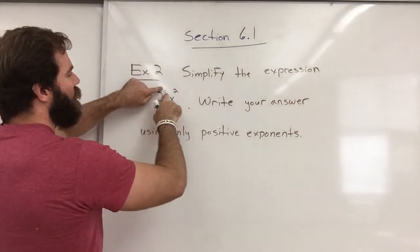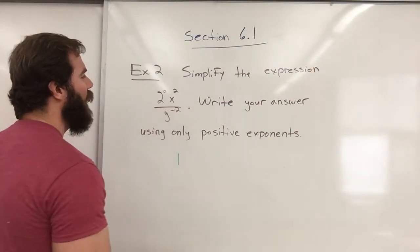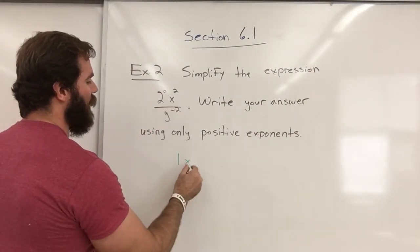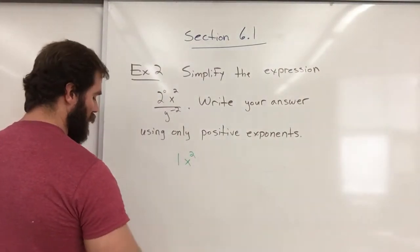2 to the 0 is 1, right? Now, I don't really have to write 1. It just basically goes away because 1 times x squared is x squared, right?